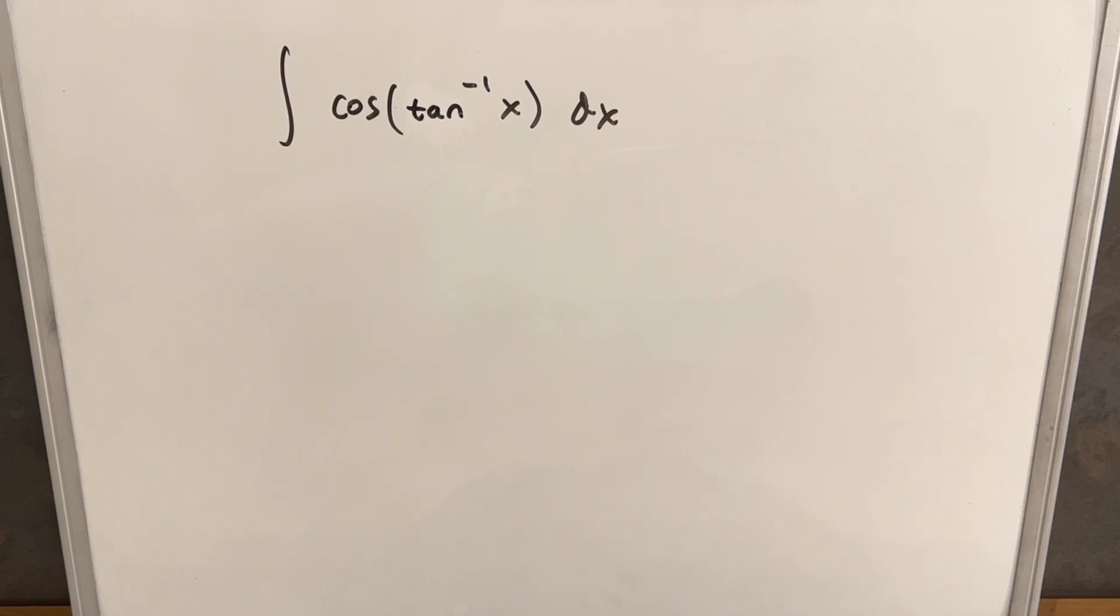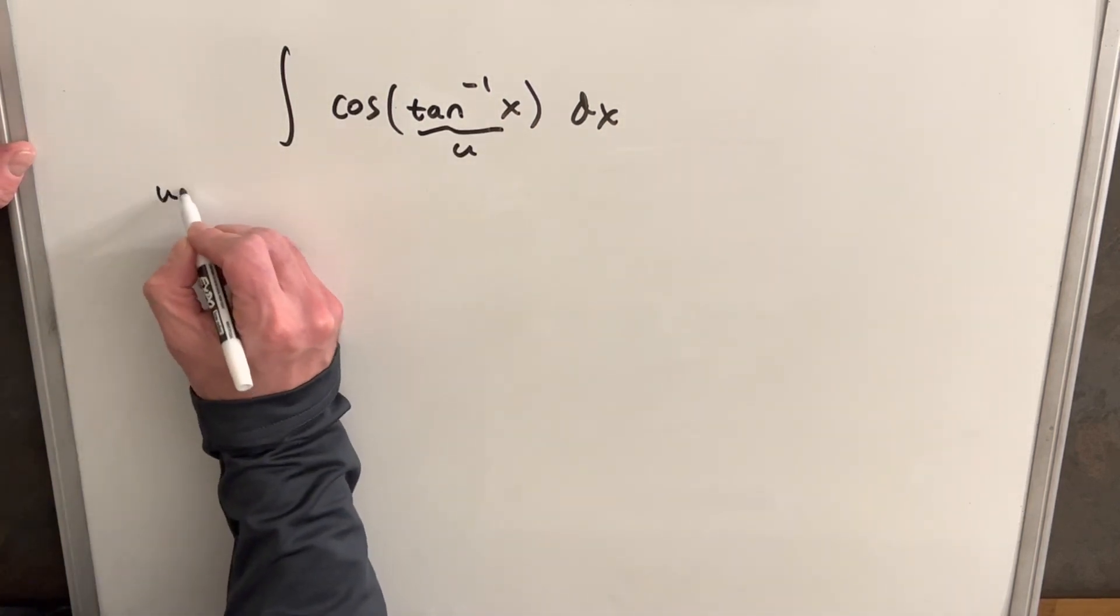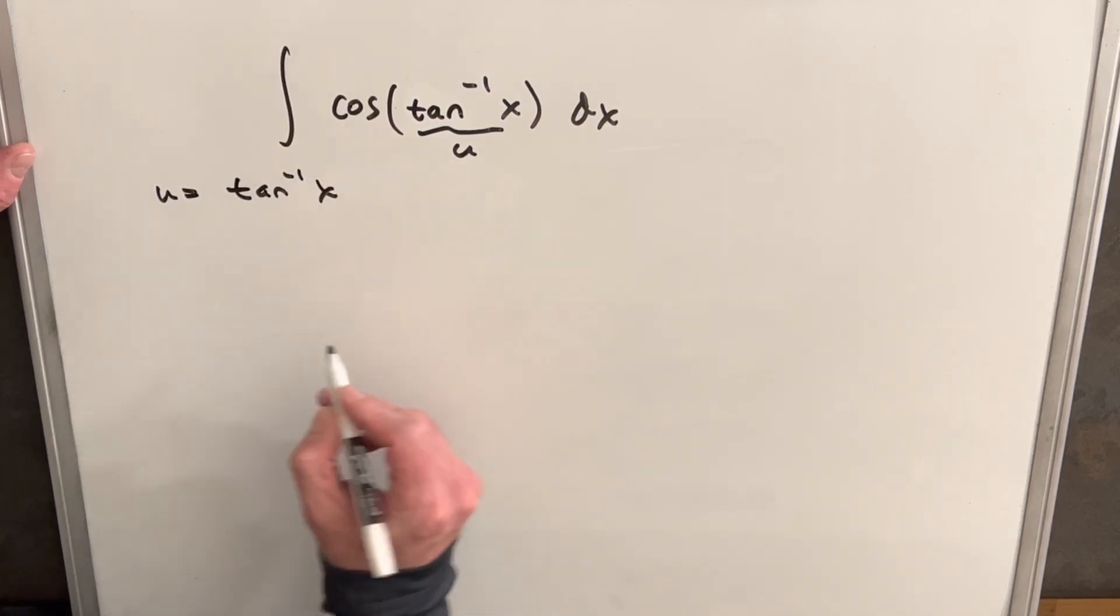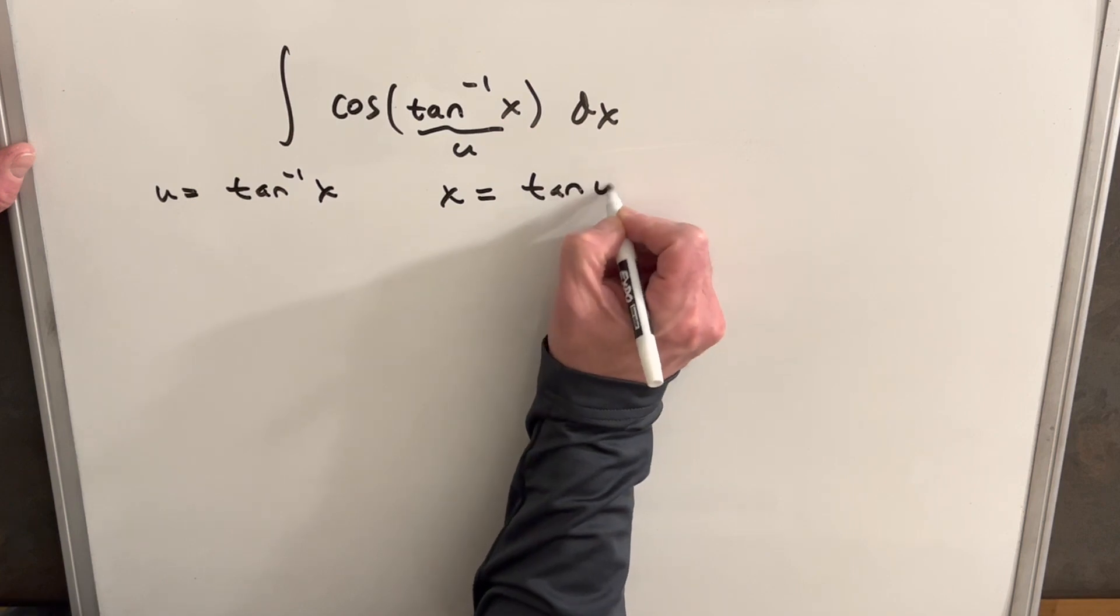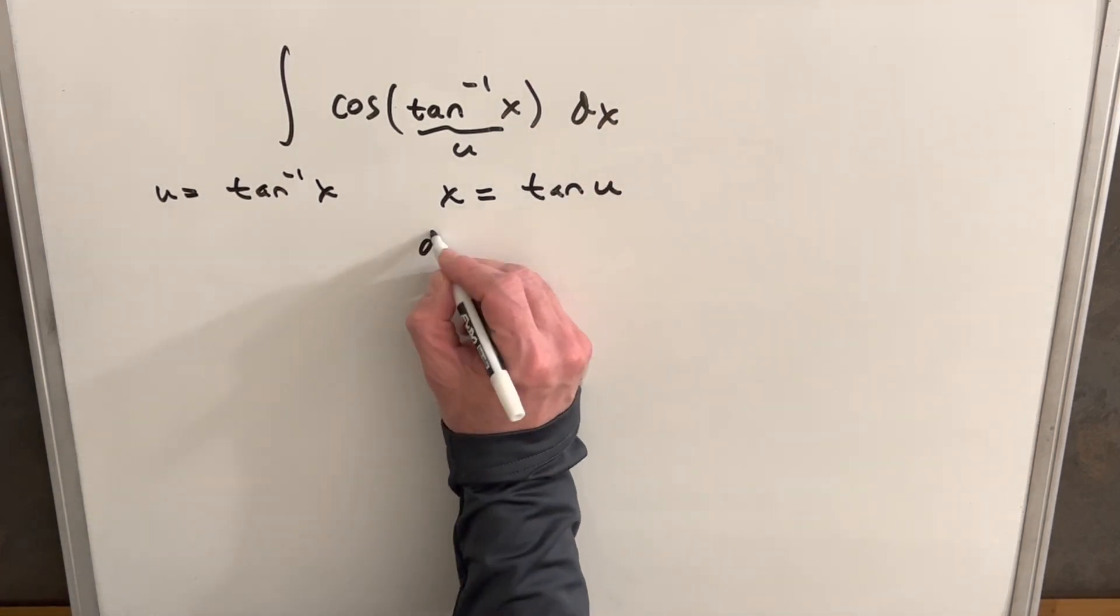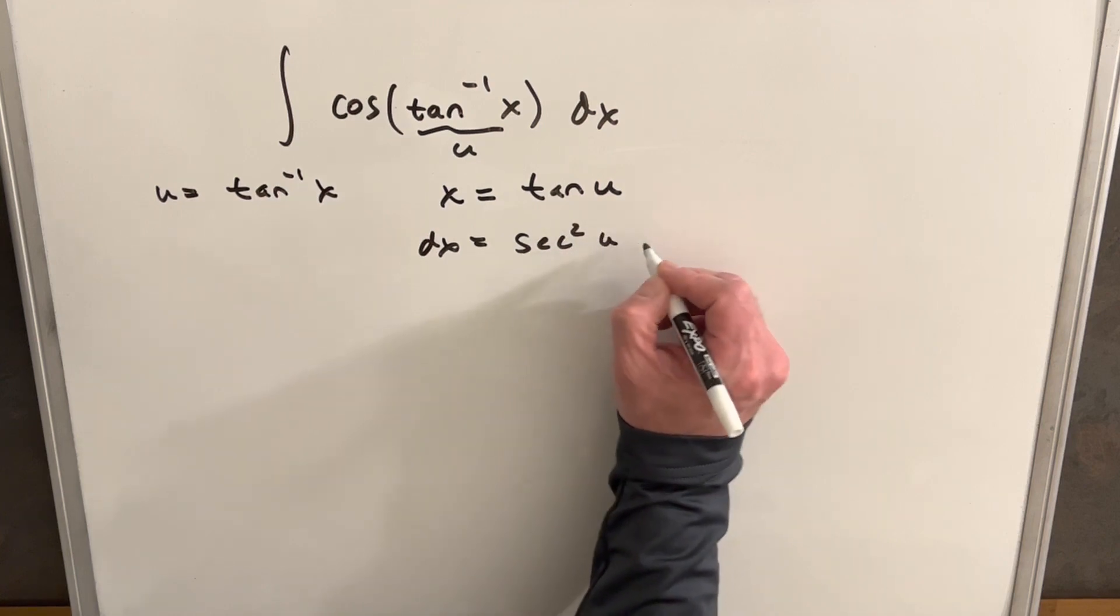So to get started the short way is going to be we'll do a u substitution here. So u is going to be our tan inverse x and then we can say x equals tan of u. Getting for our dx we want to find the derivative so dx is going to be secant squared u du.